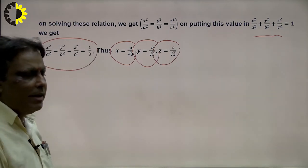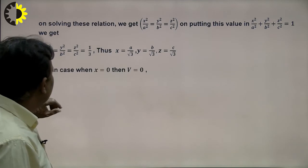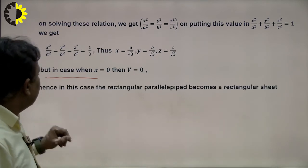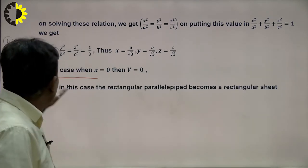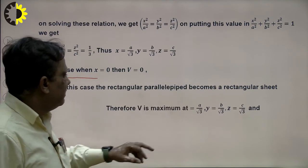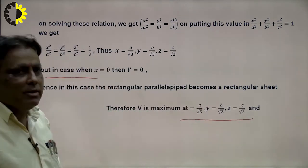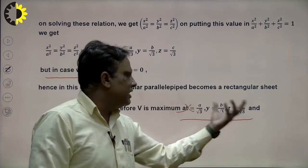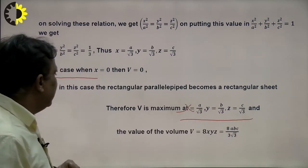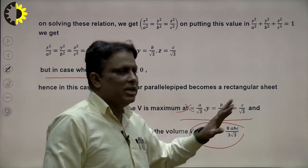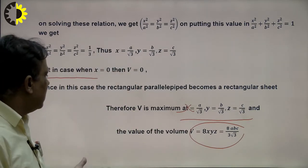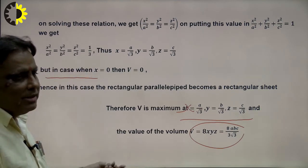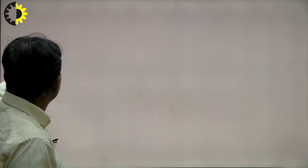In the Lagrange method, we cannot claim directly which is maximum or minimum. When x = 0, the volume is 0, and the parallelepiped degenerates. At x = a/√3, y = b/√3, z = c/√3, the maximum volume is V = 8abc/(3√3). In this way, we find the maximum volume of the parallelepiped inscribed in the ellipsoid using the Lagrange method.